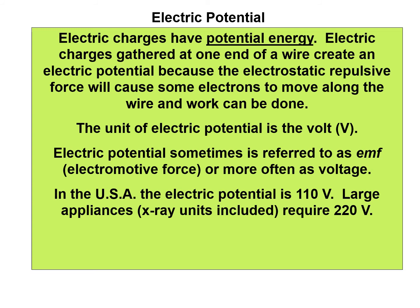Larger appliances in the home may require 220 volts, and the plug sometimes looks different. An electrician would combine two 110-volt lines to get a 220-volt line — a special line used for larger appliances like the refrigerator, washer, and dryer.